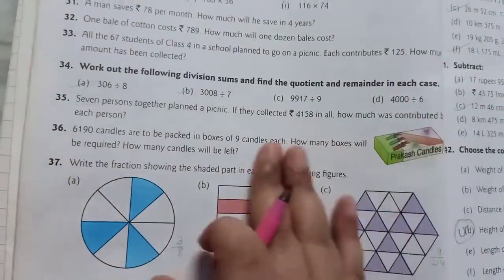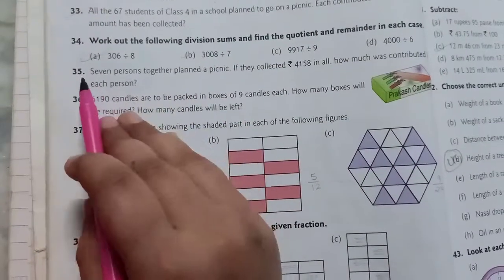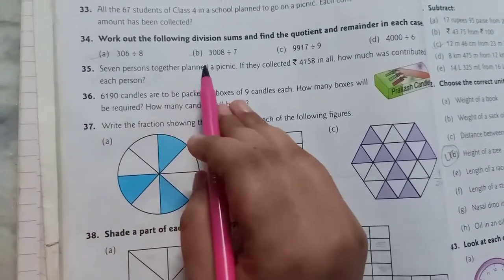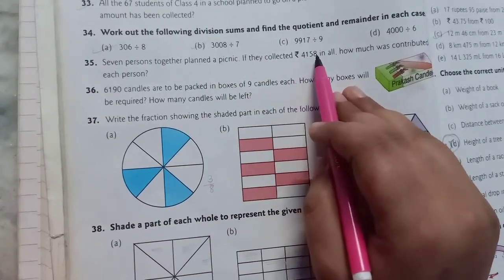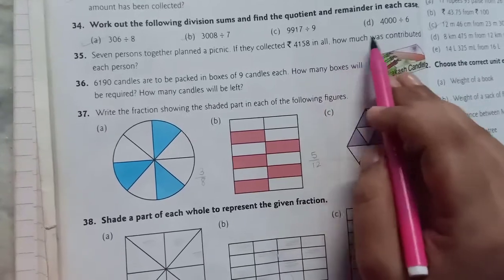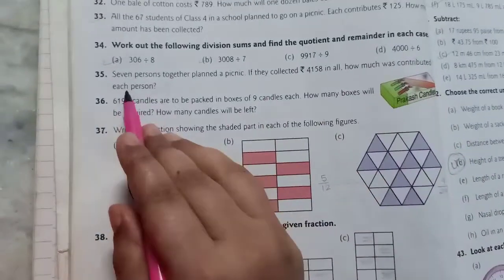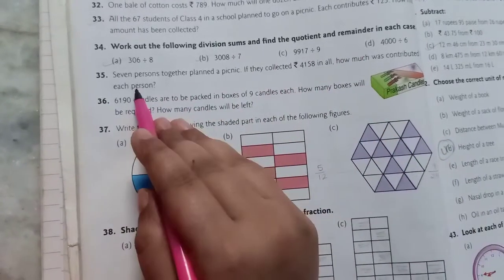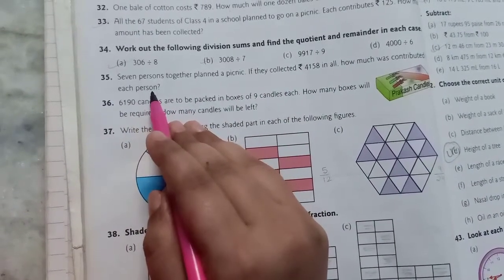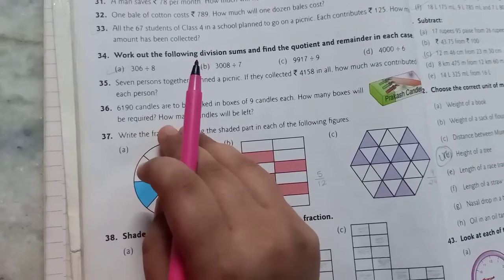Now let's read question number 35. 7 persons together plan a picnic. If they collected rupees 4158 in all, how much was contributed by each person? So whenever we have to calculate for 1, which operation do we use? We use division over here.